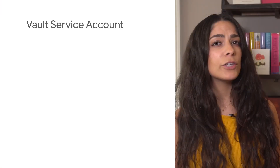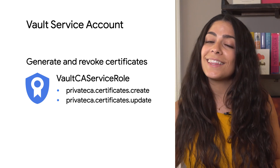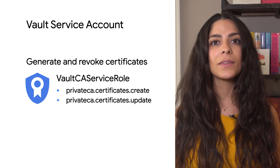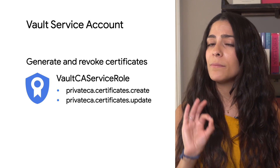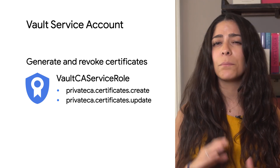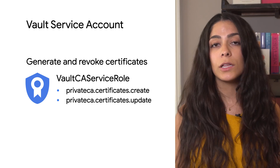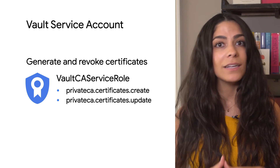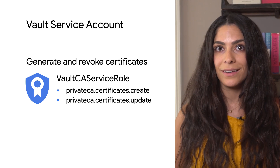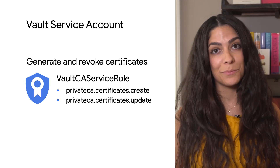You'll need to have a user or service account that Vault uses and allow it to generate and revoke certificates. We recommend using custom IAM roles here to give the Vault service account the minimal set of permissions required, which would include create and update for the private CA certificates permission set. There's a link in the description for how to create custom roles.